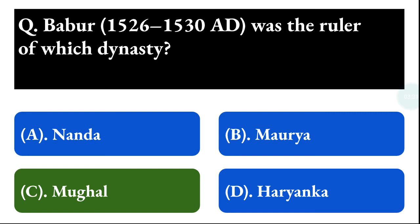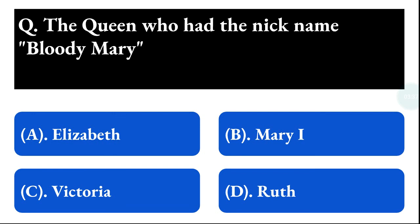Next question: the queen who had the nickname Bloody Mary — option A: Elizabeth, option B: Mary I, option C: Victoria, option D: Ruth. The correct answer is option B, that is Mary I.